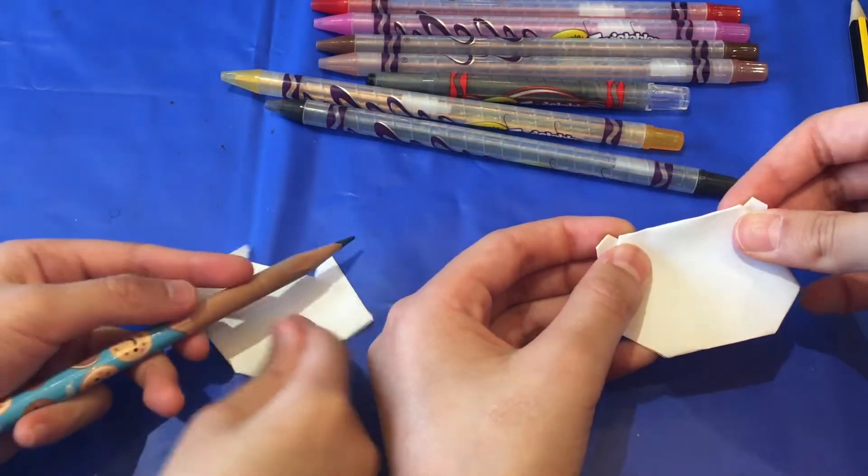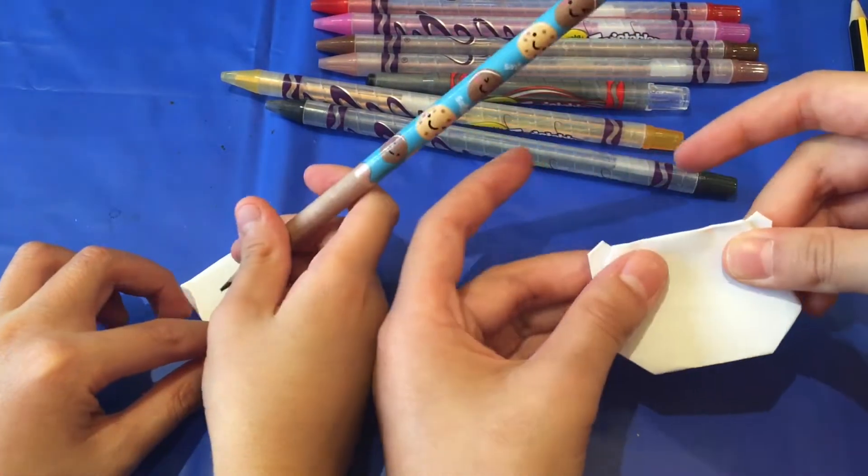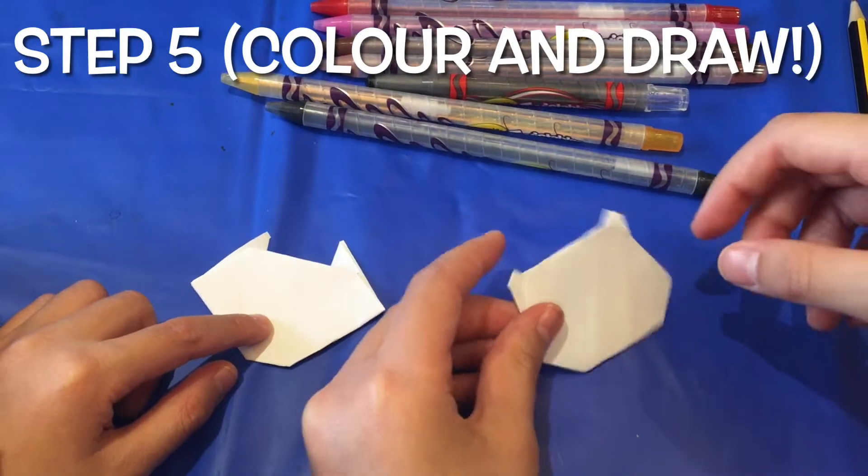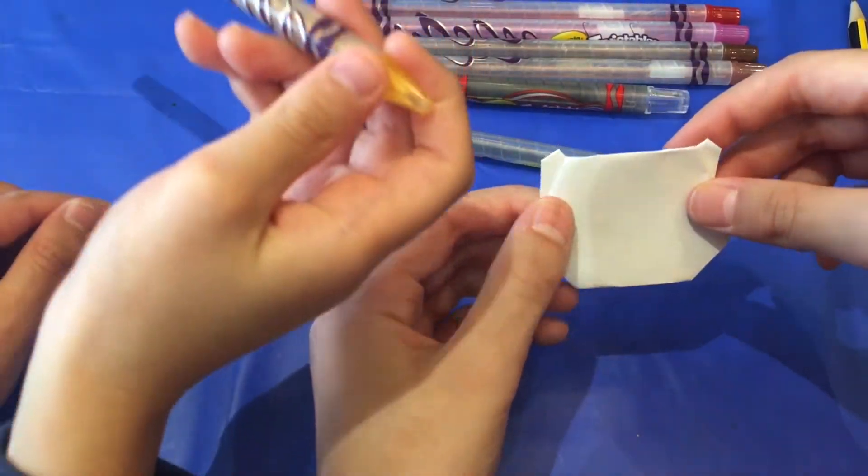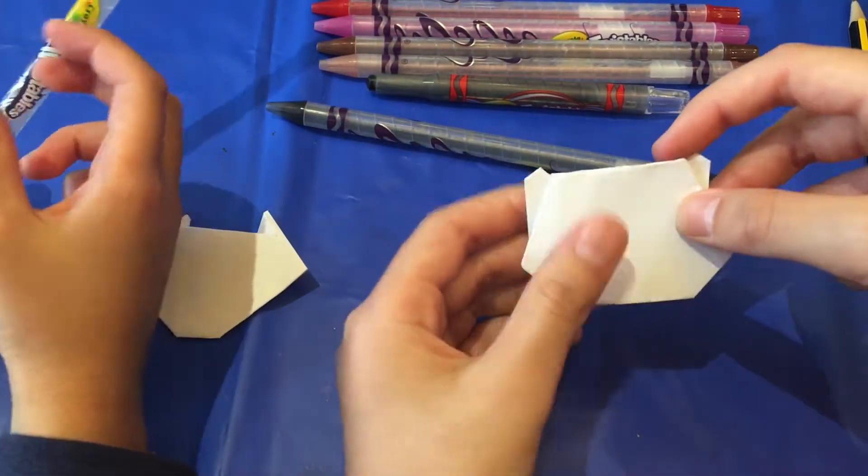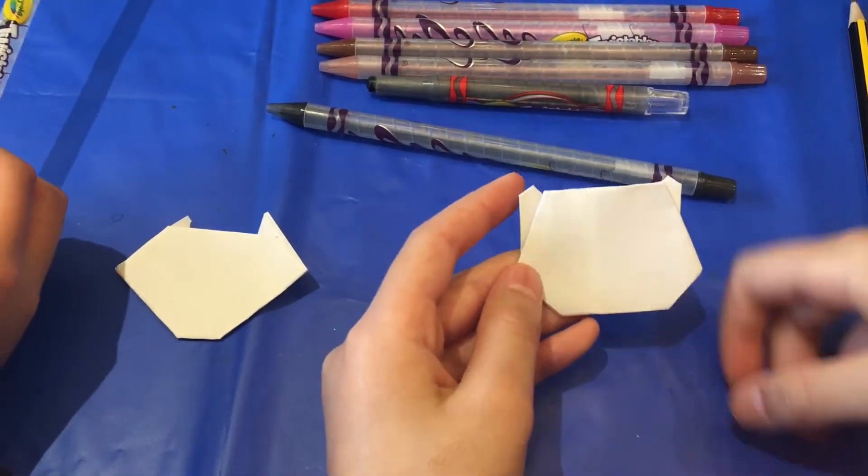After that, if you use plain paper, like white paper, you can color and draw on it. Maybe add some eyes and stuff. Or maybe you might have used color paper which might save you some time because we're going to color it. But yeah.